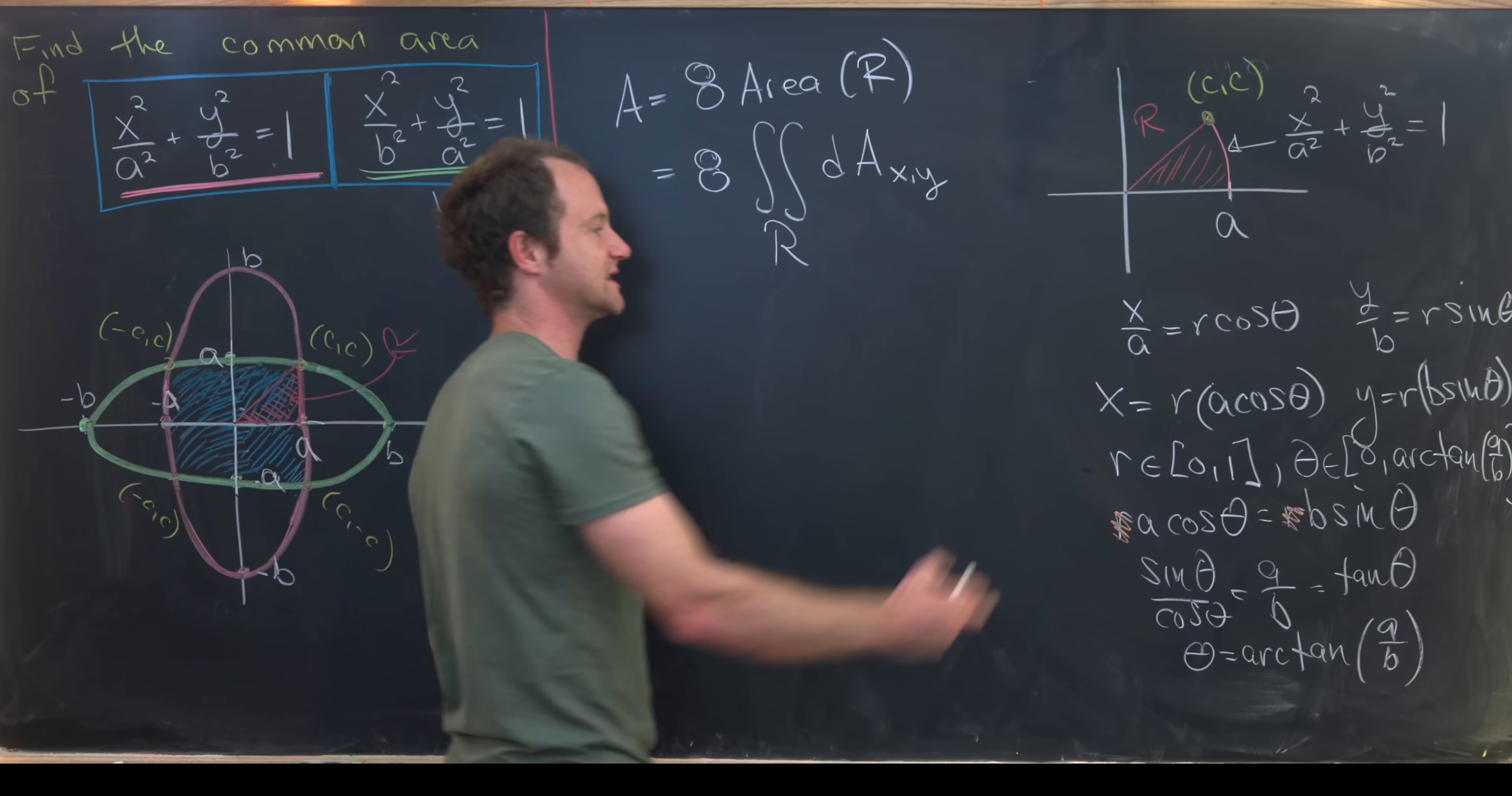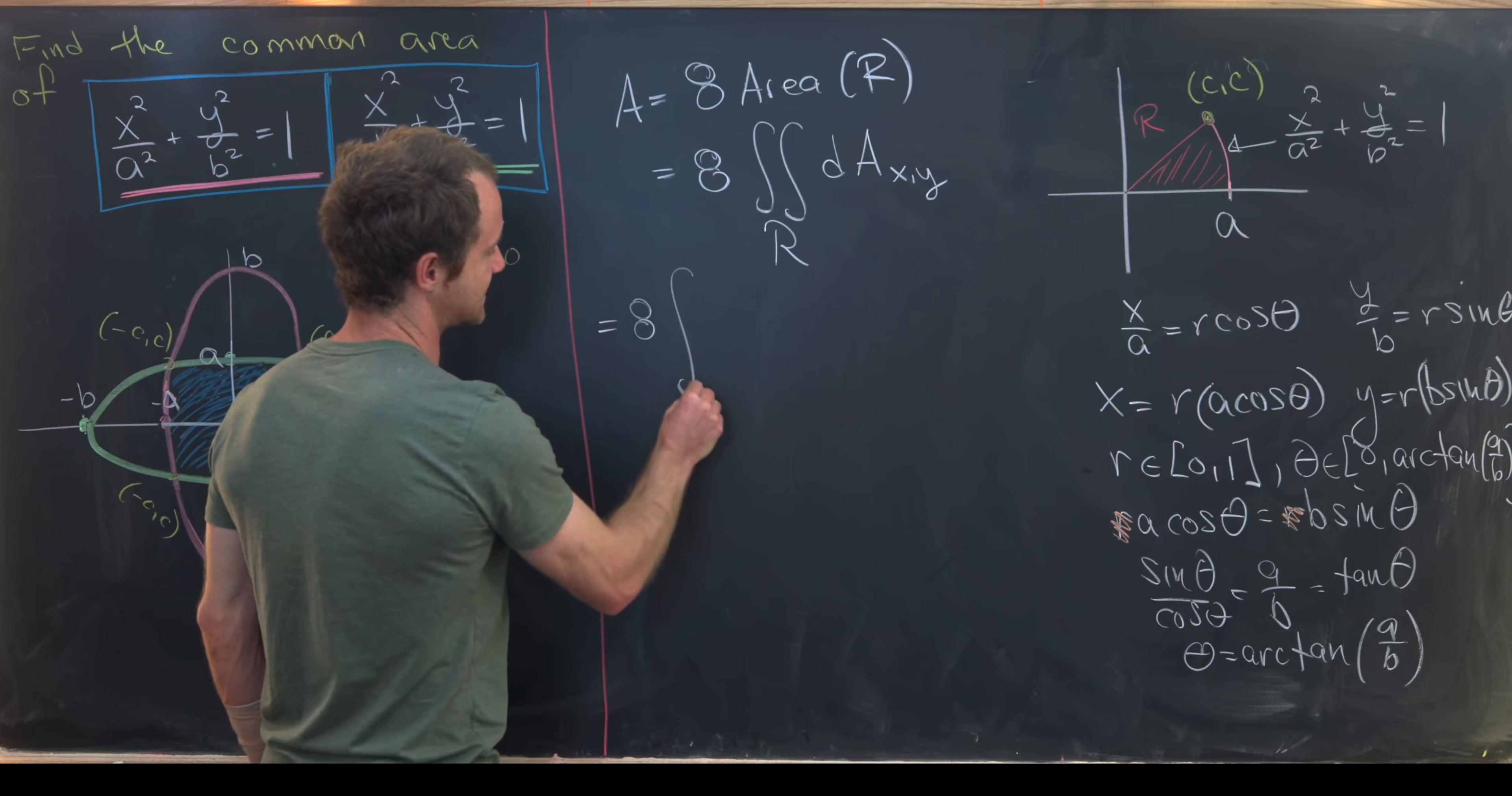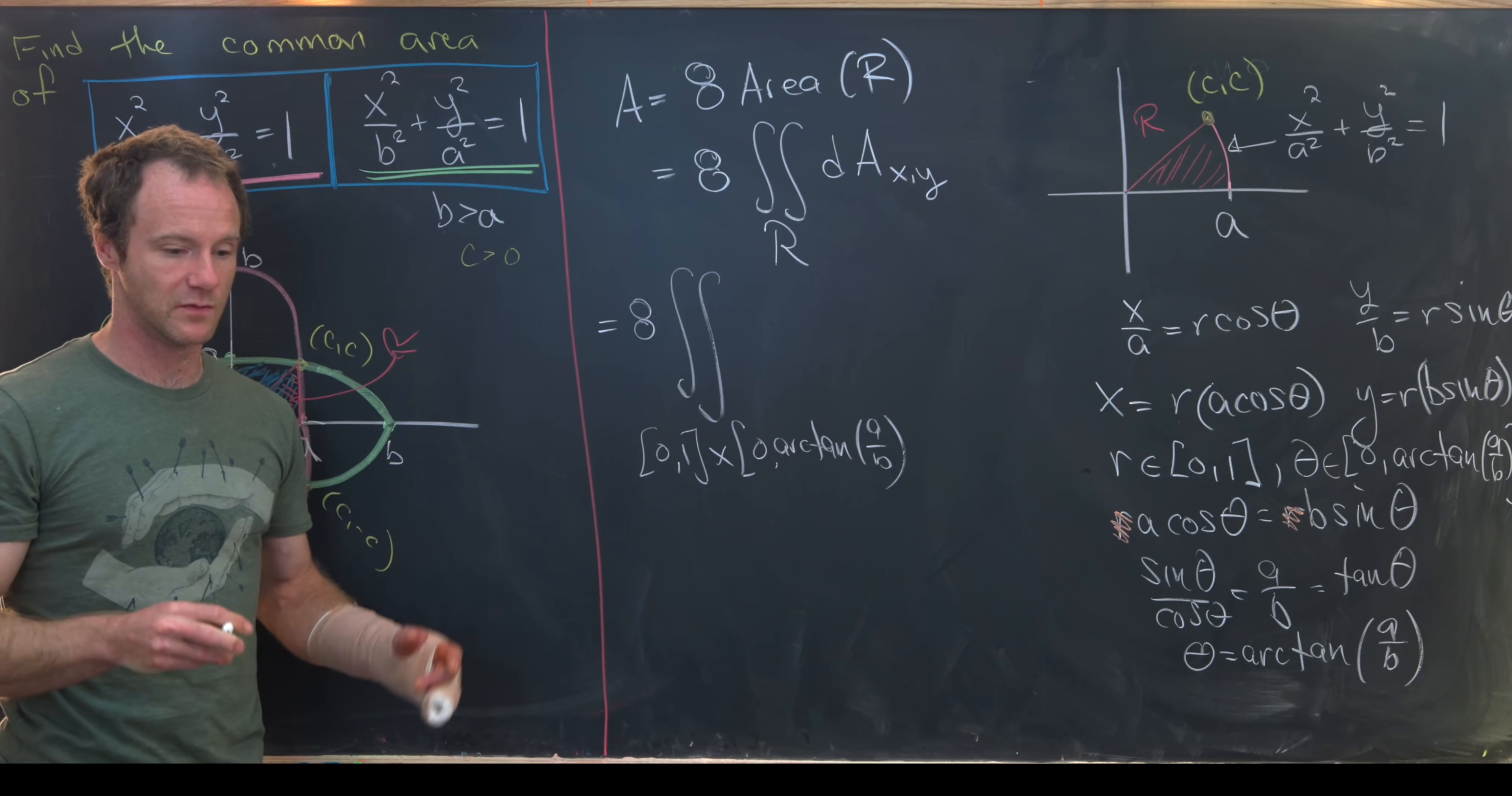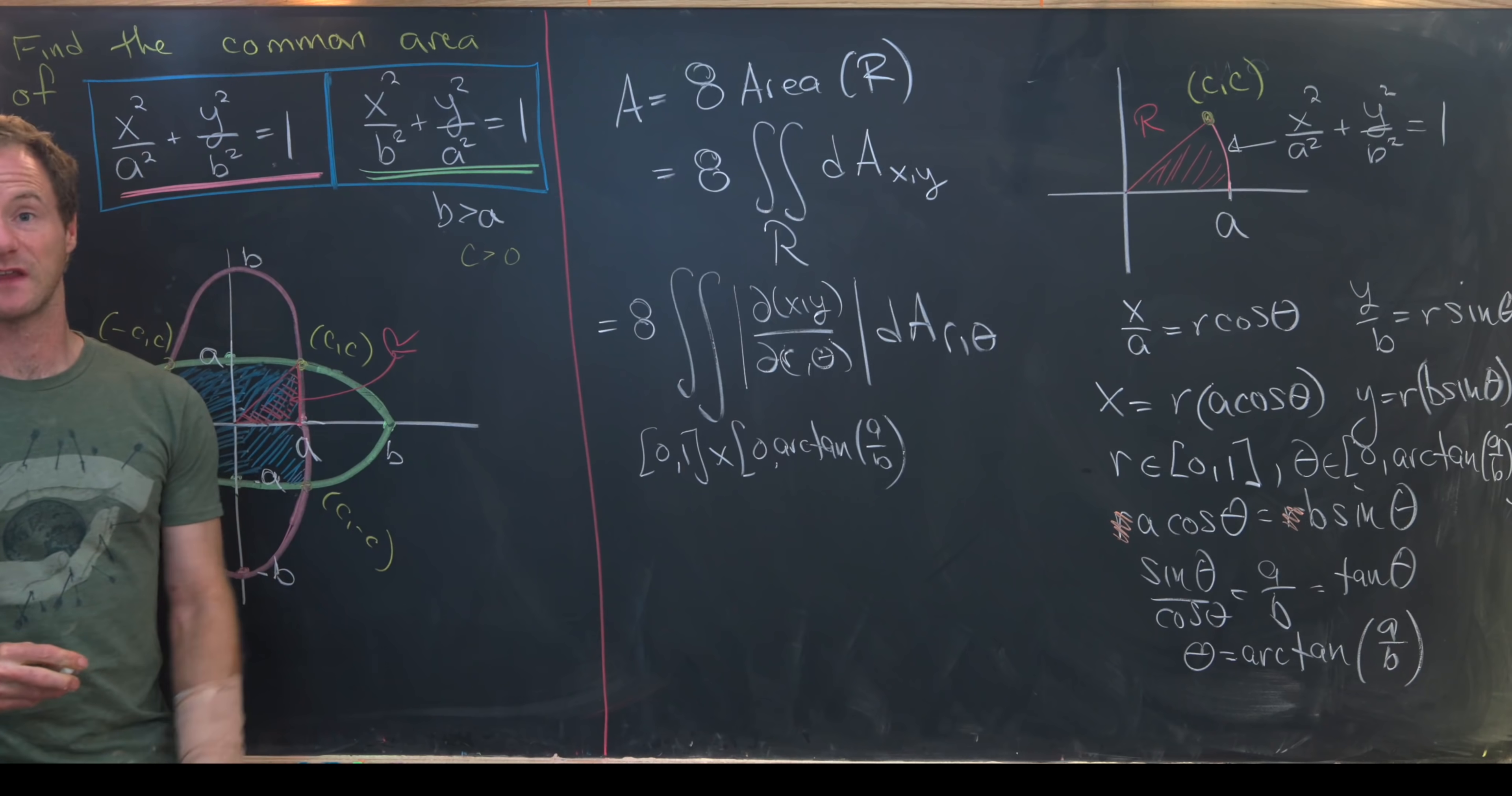And that allows us to express this red region via a change of variables as just a rectangle in this r theta plane. That means applying our change of variables formula for a double integral. We have this equal to 8 times the double integral over 0, 1 cross 0, arc tan of a over b of the differential area component along with the Jacobian. Let's recall that that is the absolute value of the determinant of dx dy dr dtheta, and then d a r theta.